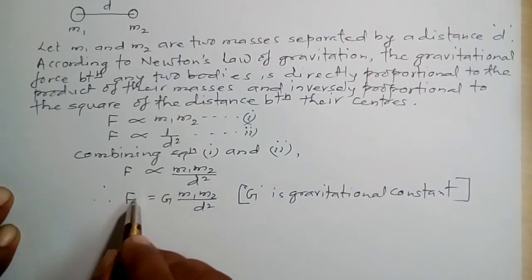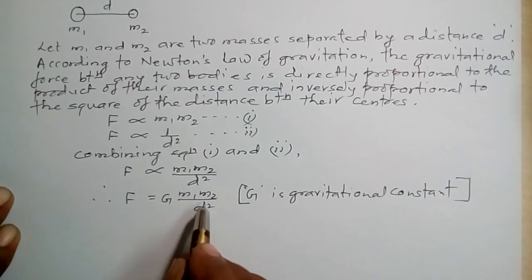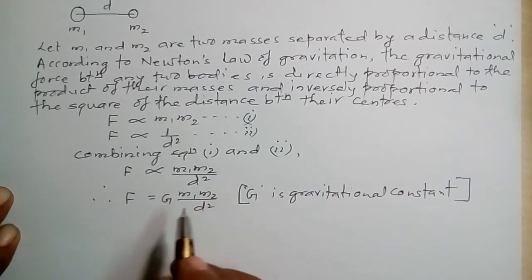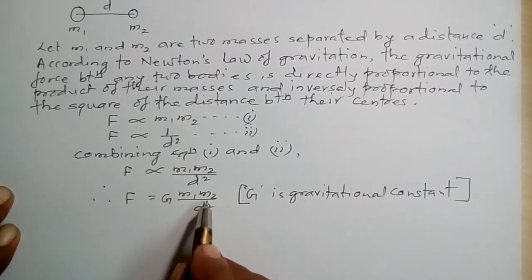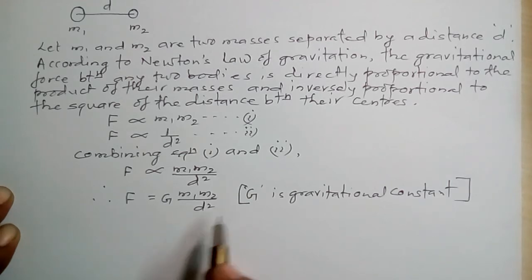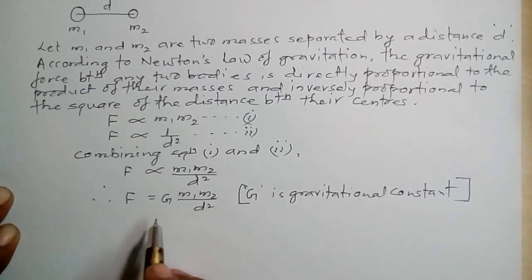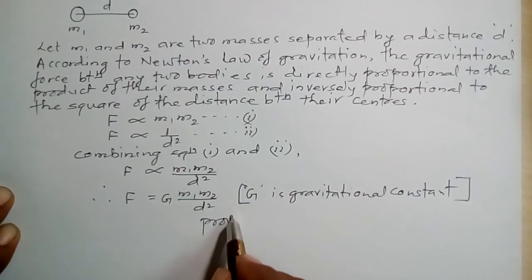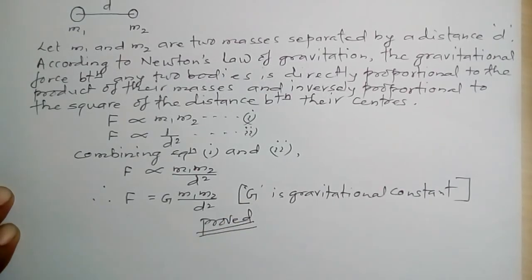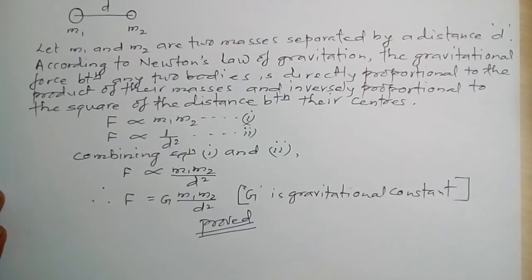Therefore, the gravitational force between any two bodies is equal to G times M1 times M2 divided by D square. F equal to GM1M2 by D square is proved. This equation can be used to solve numerical problems related to any two bodies in the universe to calculate the gravitational force between them.